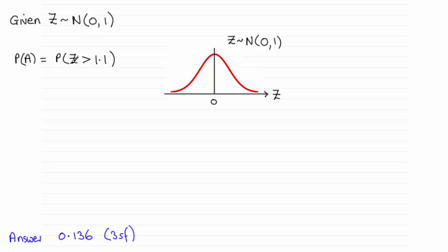So we're looking for the probability of Z being greater than 1.1. So if I was to mark this on the diagram, let's say we put 1.1 there, then that's represented by this region to the right of 1.1. And that area there is directly proportional to the probability.